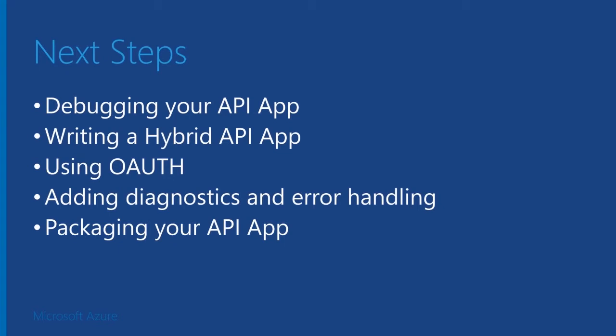There are a set of next steps, but I don't have a lot of time. We could show you how you can debug your API app, how you can write a hybrid API app, how to use OAuth, how to use diagnostics and error handling in your API app, and lastly — which is very important — how you can package your API app and publish it in the marketplace. Right now you cannot do it, but our vision is that we will have a marketplace where you guys can come, write your API apps and connectors, and fill the marketplace.